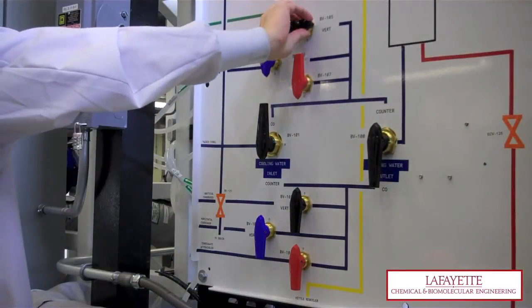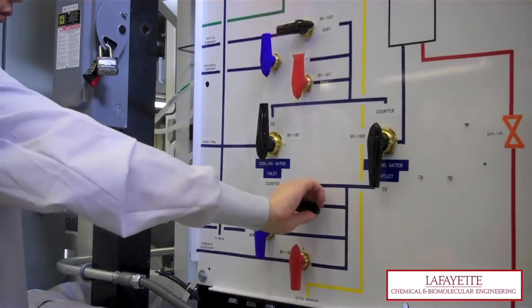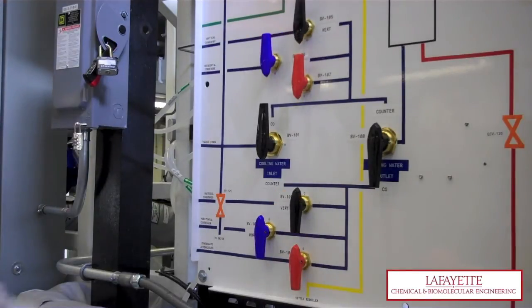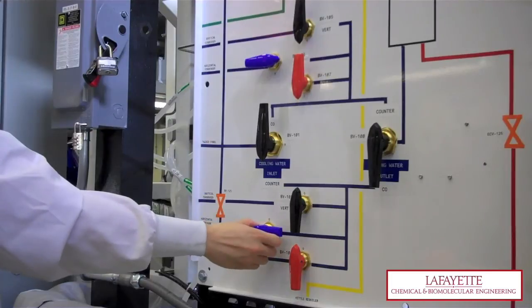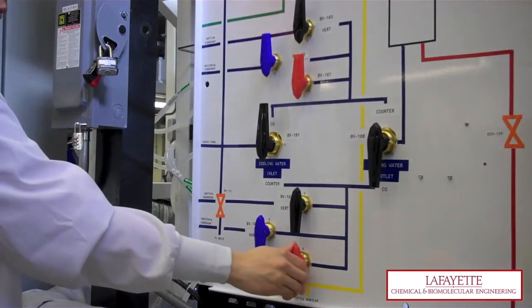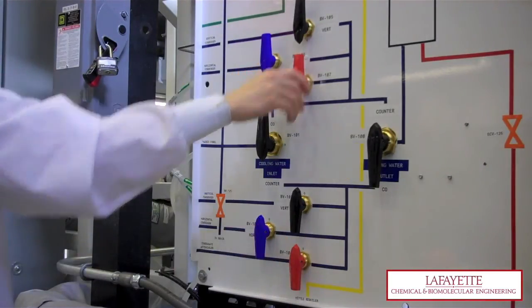On the right panel, open BV105 and BV102 to utilize the vertical condenser. Open BV106 and BV103 to utilize the horizontal condenser. Ensure that BV107 and BV104 are closed.